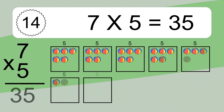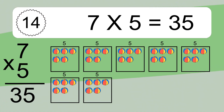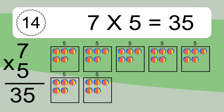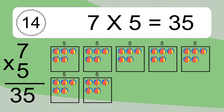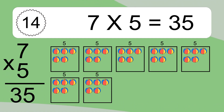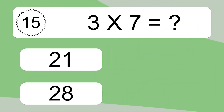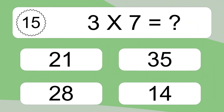7 times 5 equals 35. We have 7 boxes and each box has 5 colorful balls inside. If you count all the balls in all the boxes together, you will have 7 times 5 balls. This equals 35 balls. 3 times 7 equals what?